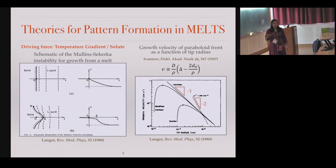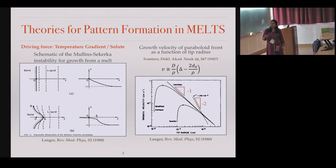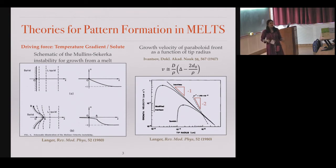This is the classic Mullins-Sekerka type instability — growth in a temperature gradient. What happens is that if this crystal is growing in a gradient and there is a bulge, then the tip experiences a steeper gradient and therefore grows faster, whereas the crest does the opposite, and hence the instability grows.